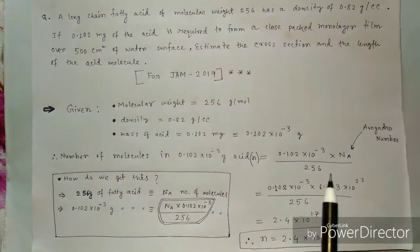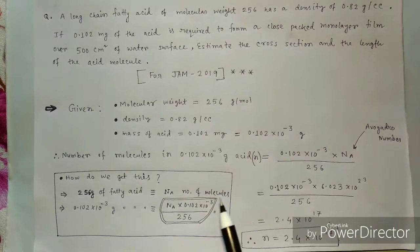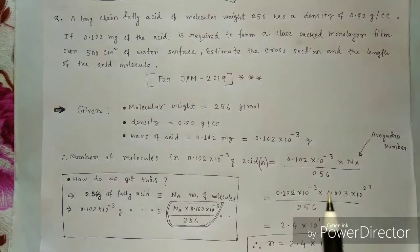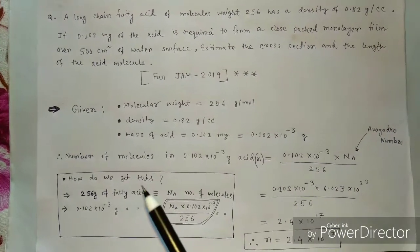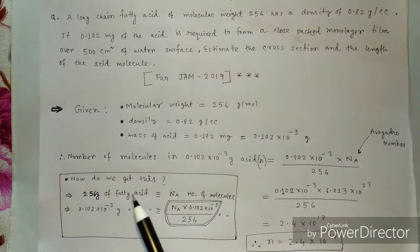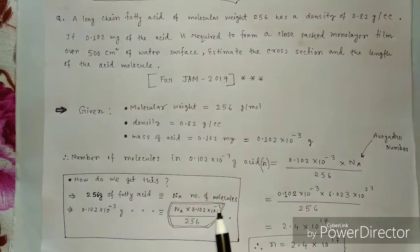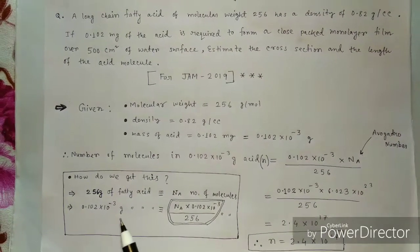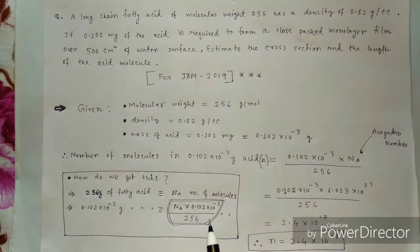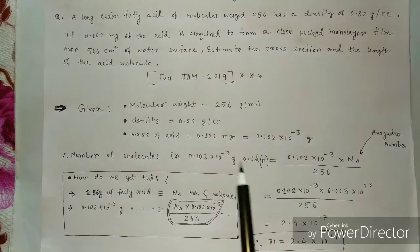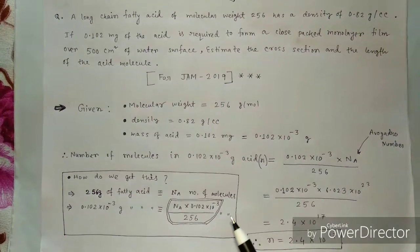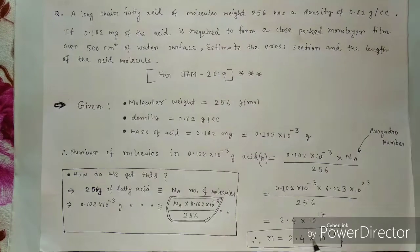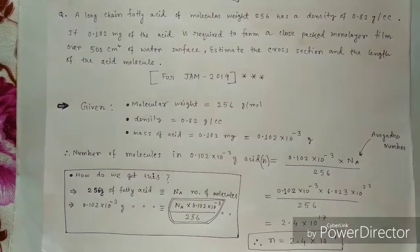The number of molecules N is equal to (0.102 × 10⁻³ × Nₐ) / 256. This is because 256 grams of fatty acid is equivalent to Nₐ (Avogadro's number) of molecules, so 0.102 × 10⁻³ grams gives us Nₐ × 0.102 × 10⁻³ / 256 number of molecules. Calculating this, we get N = 2.4 × 10¹⁷ molecules.